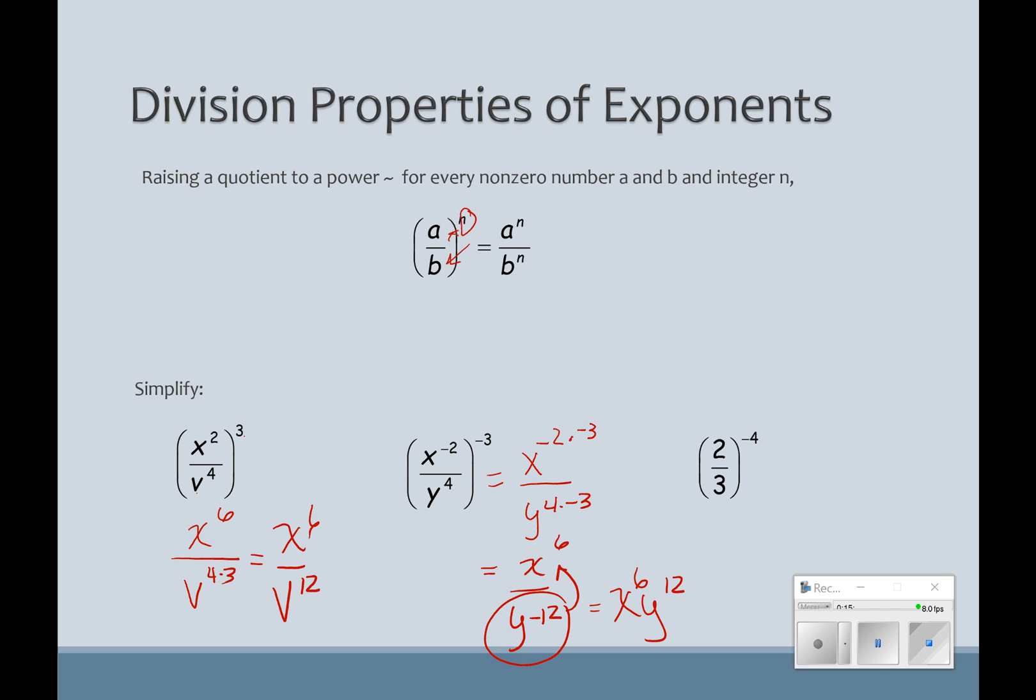If my exponent is on the outside and it's the only thing that's negative, another way that we could deal with it is just to flip the whole fraction. So we could get 3 halves to the positive 4. And that's going to give me 3 to the 4th over 2 to the 4th. And if I'm going to multiply that out, 3 to the 4th is 81, and 2 to the 4th is 16. And that's simplified. Why does that work? Well, if I were to multiply that inside, I would get 2 to the negative 4 over 3 to the negative 4, and then I would just have to flip them from there. So you can deal with it however you think is the best way for you to remember.